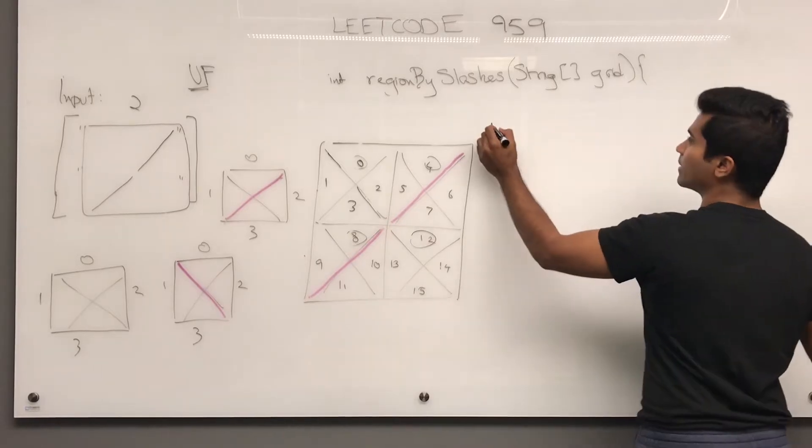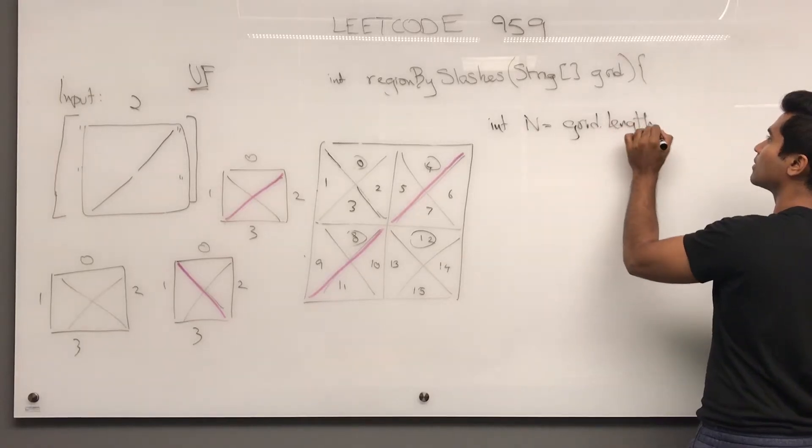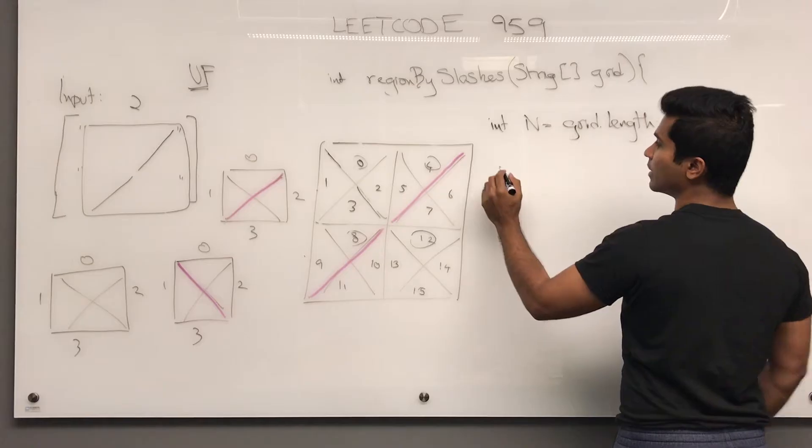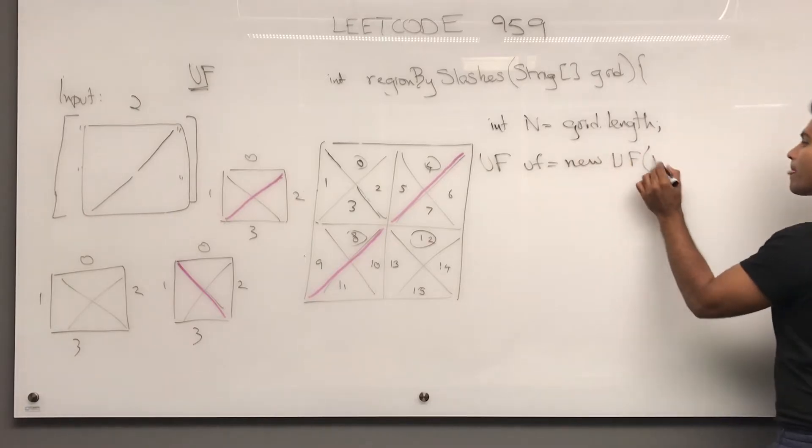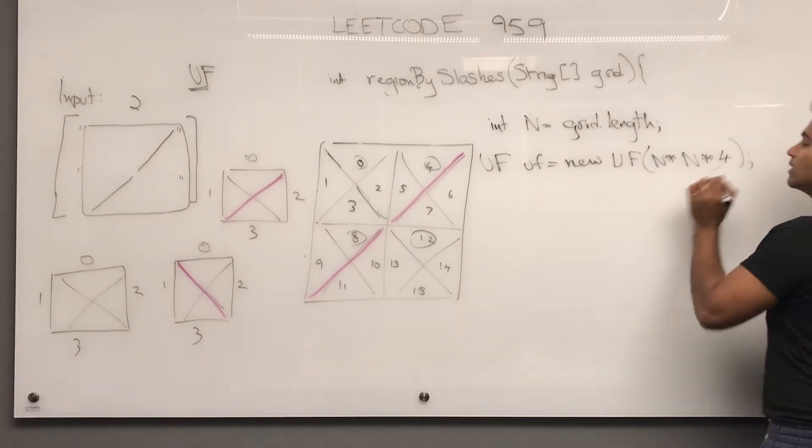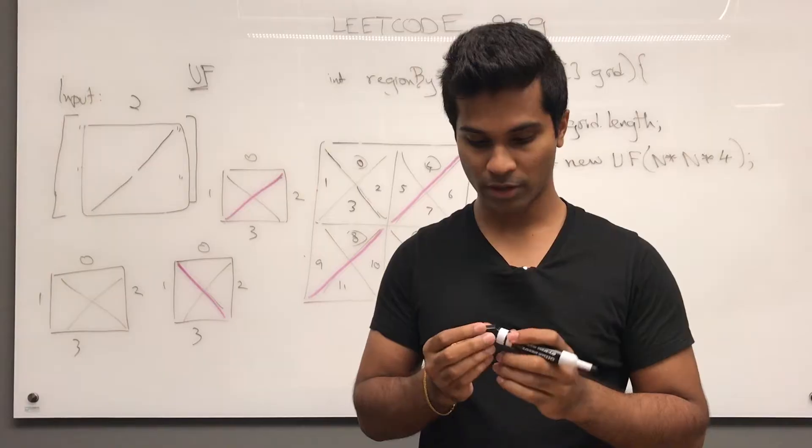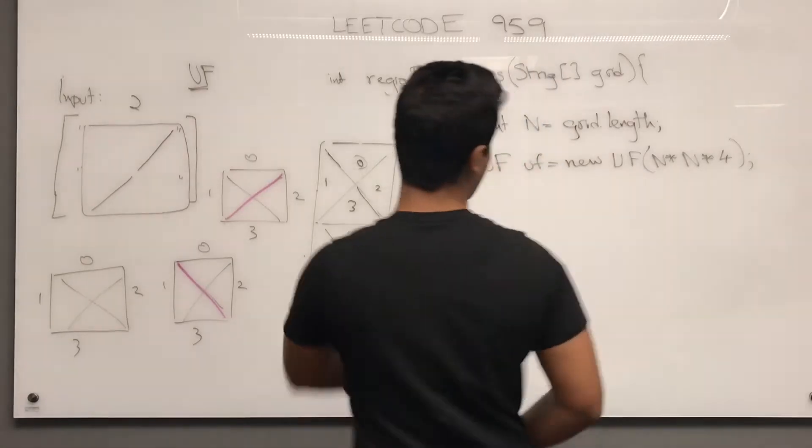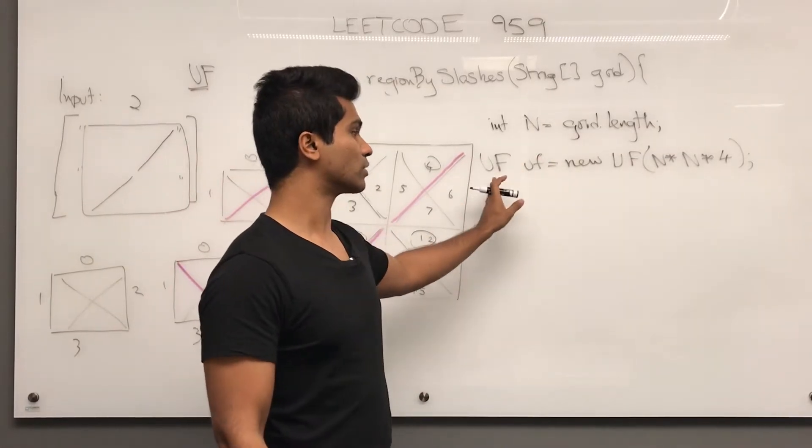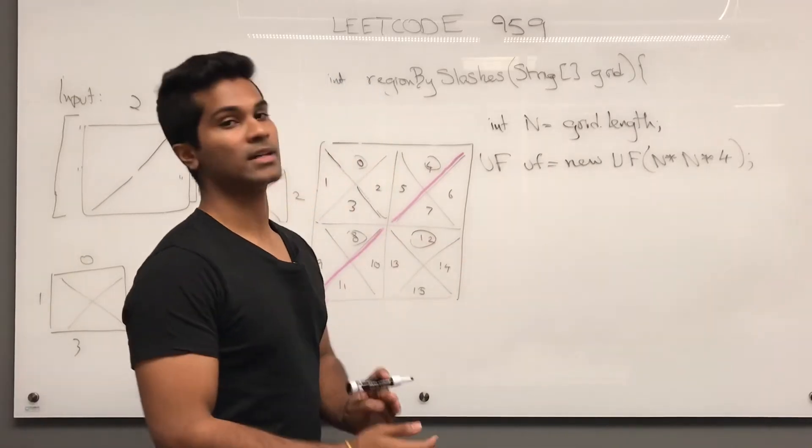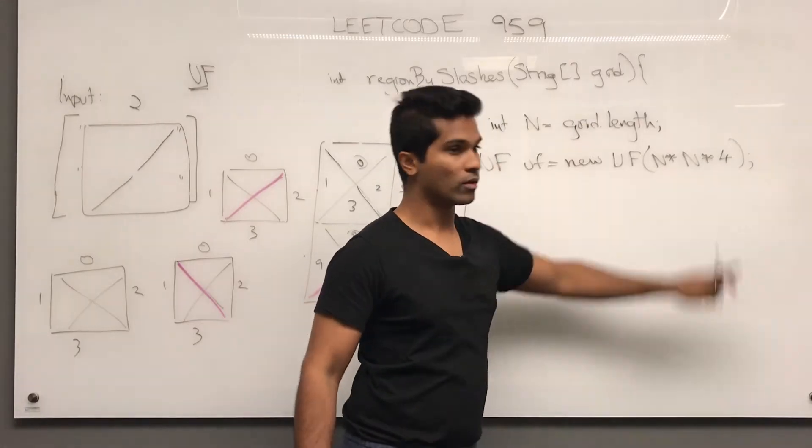First what we do is we get int n is grid dot length and then what we do is we initialize our union find data structure. Now I'm not going to go over how to create the union find data structure. I think geeks for geeks has the best explanation for it. But what this line does is pretty much initializes the internal array that a union find data structure is going to make use of and the size of that is going to be 16 in total, so 2 times 2 times 4 which is 16.